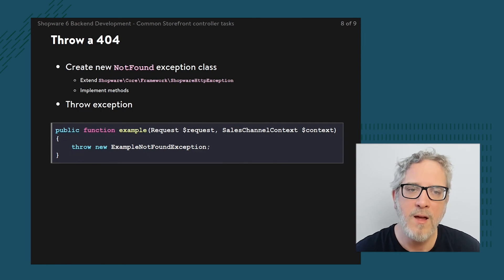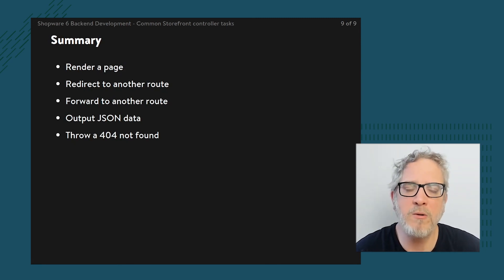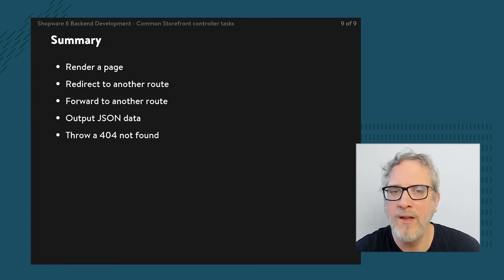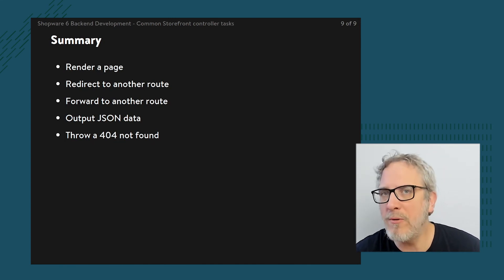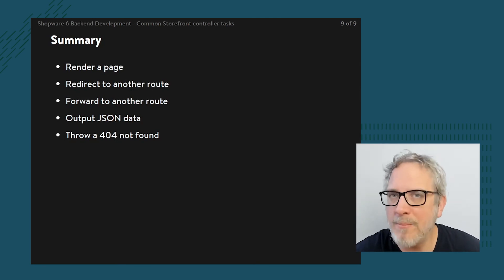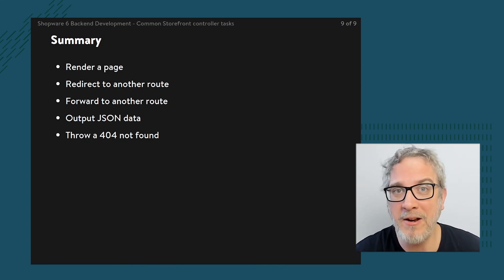In this lesson I really tried to focus on the inspiration of what you could do with a controller — specifically tasks like rendering a page, redirecting, forwarding, or outputting data. Alongside JSON data, you might want to output a PDF document or throw specific errors under specific circumstances. In general this sums it up, and this is essential to get you started with building your own plugin for 99% of all tasks. Hope you enjoyed it, hope it gives you a little bit of inspiration, and I hope to see you back in another lesson.